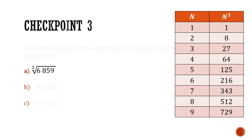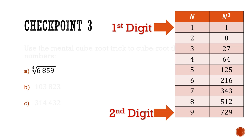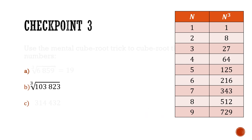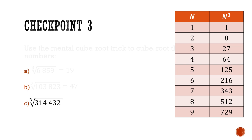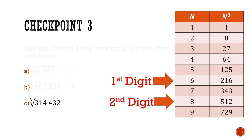Let's go through the answers using the cube table. For part A, throwing away the last 3 digits gives 6, which is between 1 (1 cubed) and 8 (2 cubed), so the first digit is 1. The last digit is 9, which also ends with 9 in the cube table, so the second digit is 9 — giving 19. For part B, removing the last 3 digits gives 103, between 64 (4 cubed) and 125 (5 cubed), so the first digit is 4. The last digit is 3, giving second digit 7, so the cube root is 47. For part C, removing the last 3 digits gives 314, between 216 (6 cubed) and 343 (7 cubed), so the first digit is 6. The last digit is 2, giving second digit 8, so the cube root is 68.